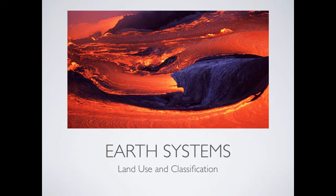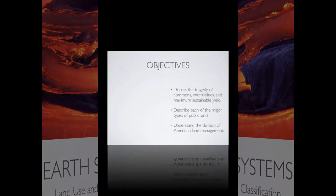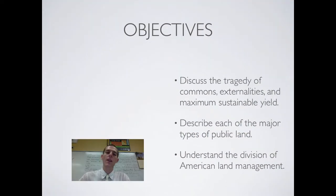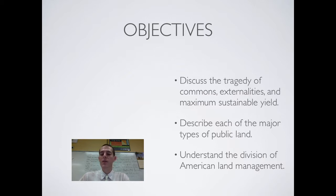Good morning everybody. Welcome to another edition of Lab 207 webcast. My name is Mr. Kite and I'll be hanging out with you today as we continue on in our series about Earth systems. The topic for the day is going to be land use and classification. By the end of this video, be able to discuss the tragedy of commons, externalities, and maximum sustainable yield. Be able to describe each of the major types of land use, and finally understand the division of American land management.